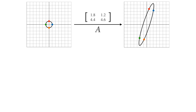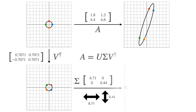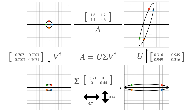Now let me show you how this is used in dimensionality reduction, or simplifying our matrix. Here is a slightly different matrix with entries 1.8, 1.2, 4.4, and 4.6. Notice how it still turns a unit circle into an ellipse, but this time the ellipse is really skinny — almost like the points are forming a line. That means the matrix is close to being a degenerate transformation, one that crunches the whole plane into a line. It means the matrix is close to being singular, with determinant near 0.